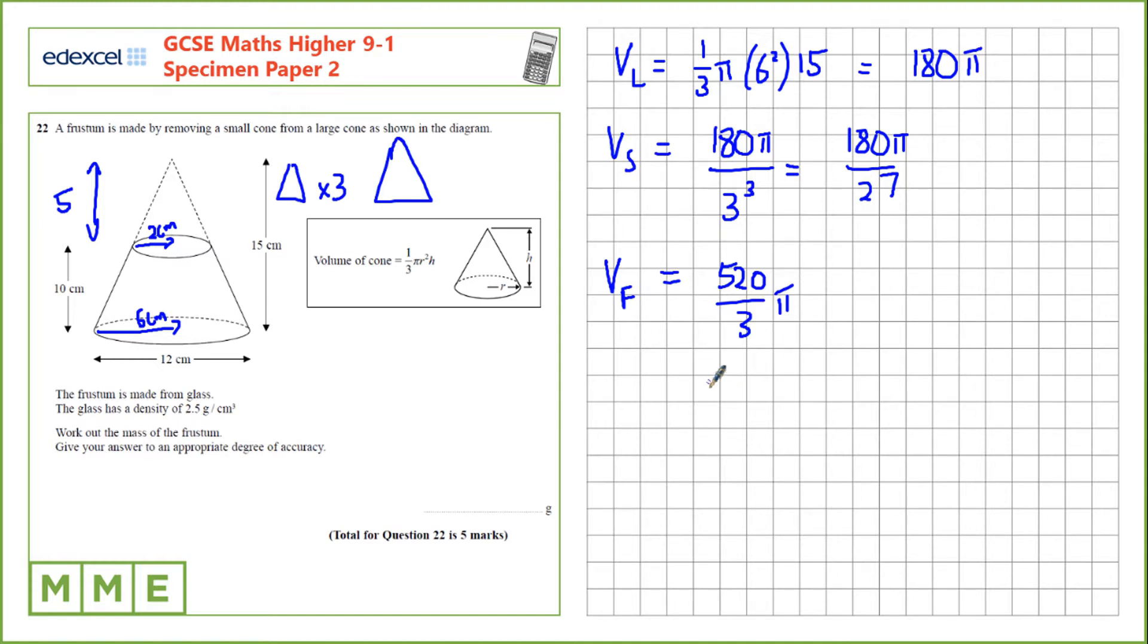From here, we need to work out the mass. We know the formula density is mass over volume. And if we're not sure about that, we can look at the units for density here. We have a mass in grams divided by a volume.